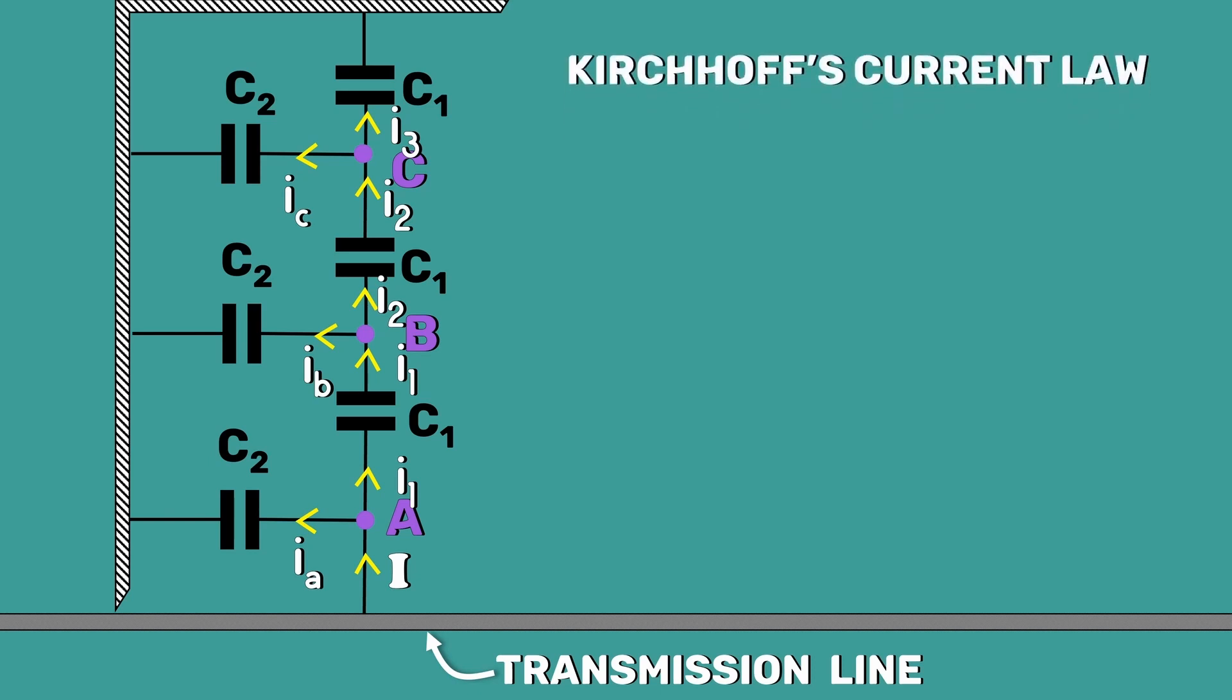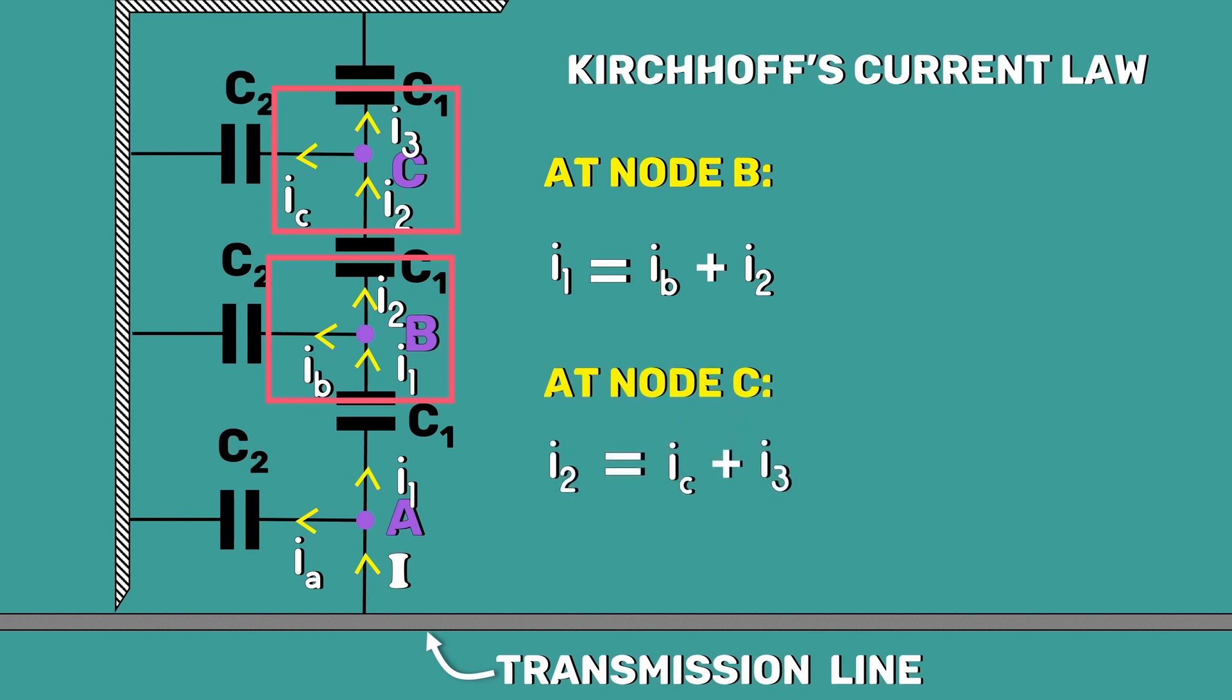Applying Kirchhoff's current law at nodes B and C, we get I1 is equal to Ib plus I2 and I2 is equal to Ic plus I3.